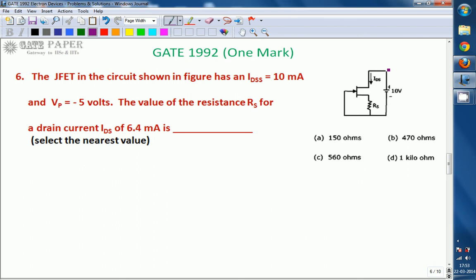Hello, we are discussing GATE 1992 ECE paper and this is one more question related to electronics. Look at the diagram. The diagram consists of a JFET. The JFET in the circuit shown has IDSS of 10mA and VP of minus 5V. The value of resistance RS for a drain current IDS of 6.4mA is...